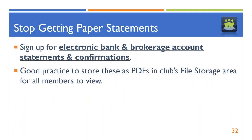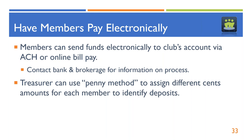As part of your electronic paperless strategy, make sure that you're getting electronic bank and brokerage account statements, confirmations, and tax reporting from your broker. It's a good practice to store those as PDFs in the club's file storage area. Your club is transparent — all members should be able to access and see that information. So it's good to keep those statements in the file storage area.